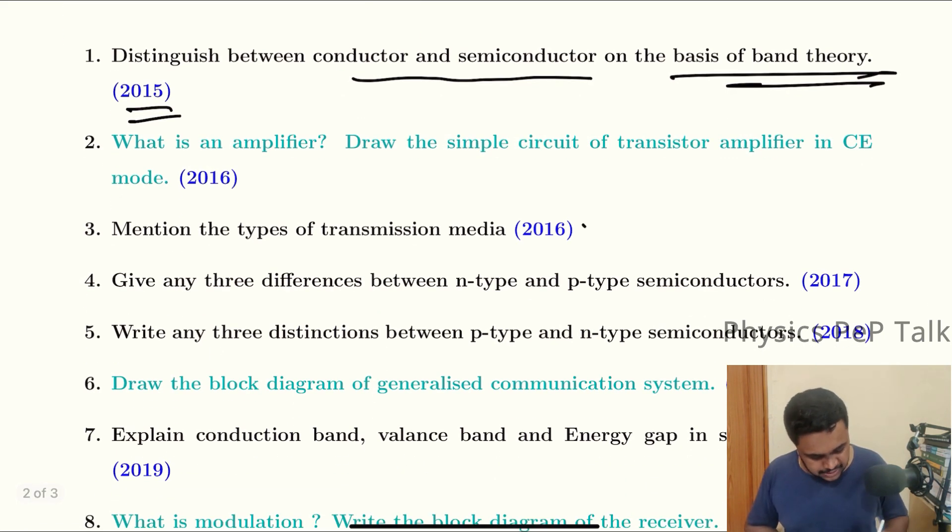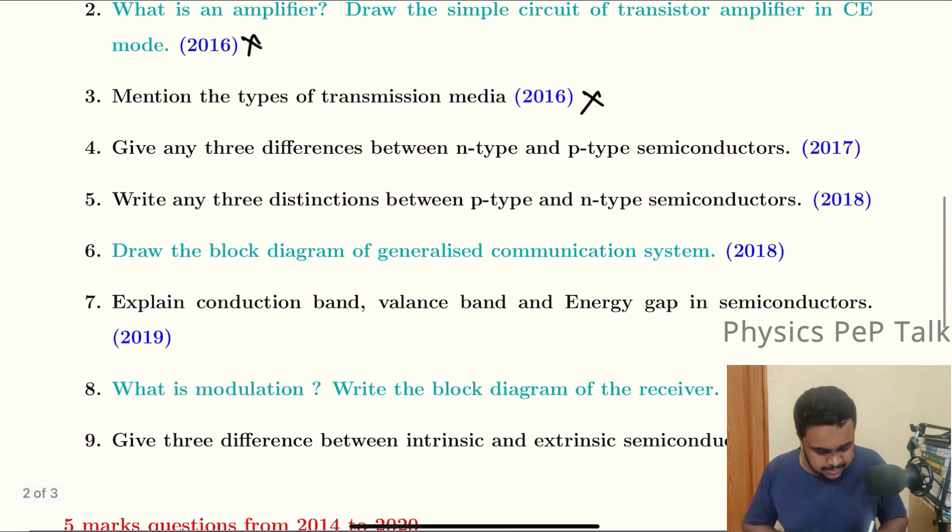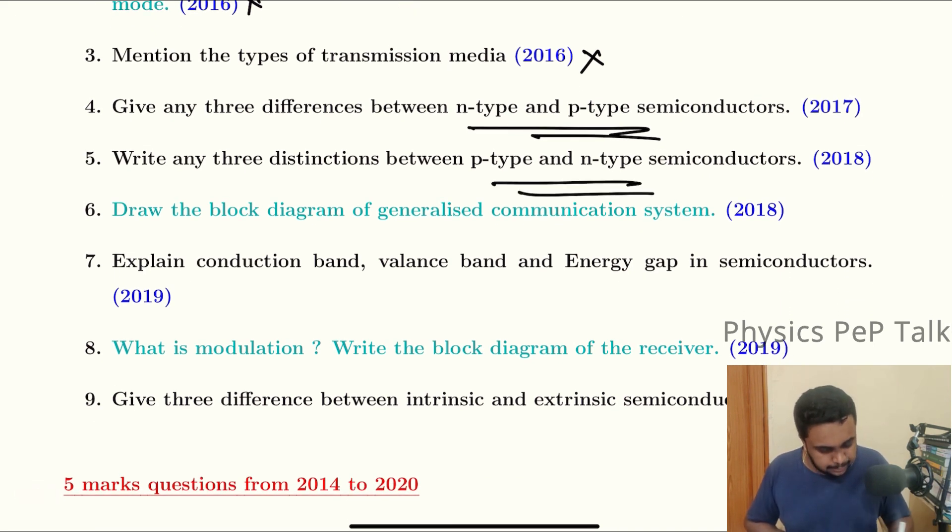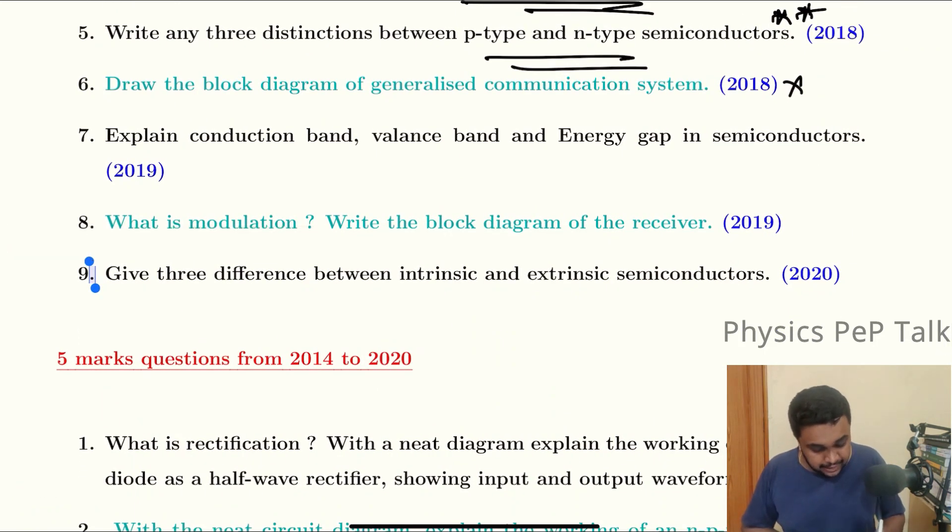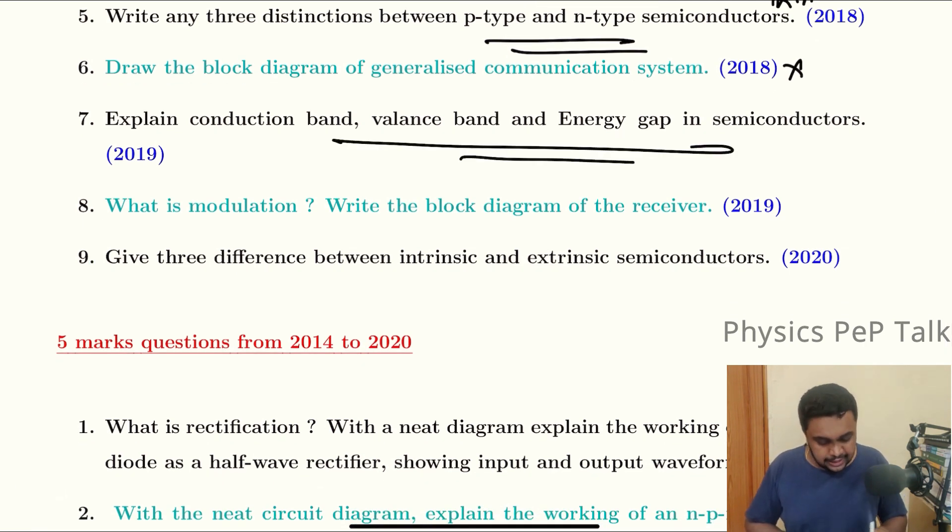Give three differences between N-type and P-type. This is a repetitive question. The differences between N-type and P-type are the same as discussed. There is a small energy gap, and even at room temperature, valence band electrons go to the conduction band. All the things are the same. This is a deleted portion.